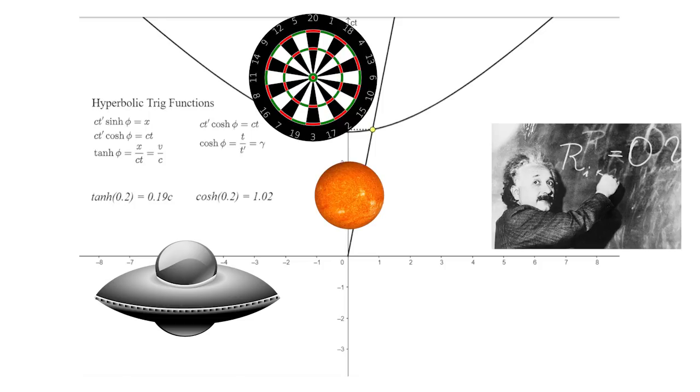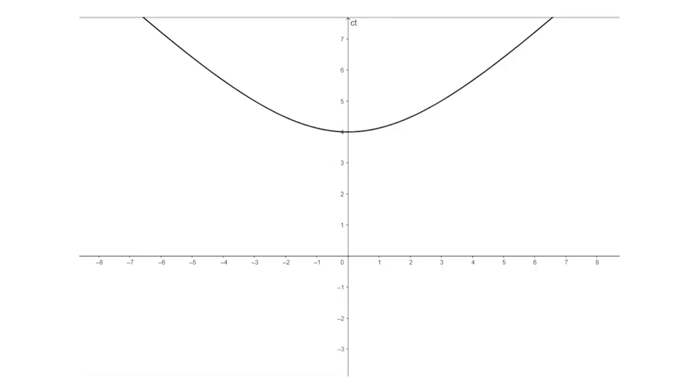On a spacetime diagram, the hyperbolic angle is the area between your speed and the hyperbola of whatever it is you're moving relative to.